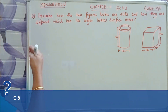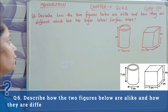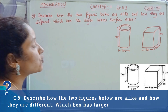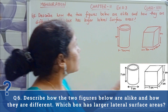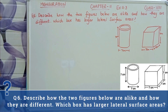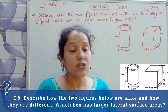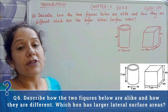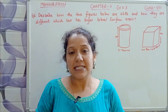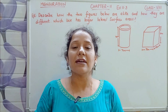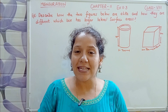Question number 6 says: describe how the two figures below are alike and how they are different. Which box has larger lateral surface area? We need to find the similarities and differences, then calculate the lateral surface area. So let's see how the solution will be done.